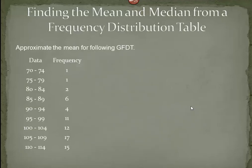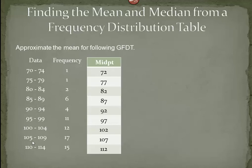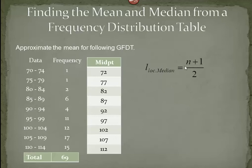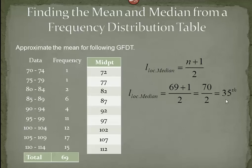Finding the median is somewhat similar, except remember the median is just the middle number. We don't know the original numbers since they've been lost once we created our frequency distribution table. However, we'll again assume the midpoint is the value of the number in whatever class the median falls into. Recall our location formula: the location of the median equals the number of values plus one, divided by two. In this case our total was 69, so we take 69, add 1 to get 70, and divide 70 by 2 to get 35. That means the median is in the 35th position when the numbers are in ascending order.